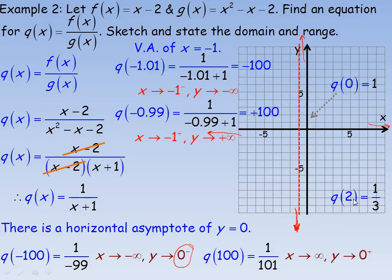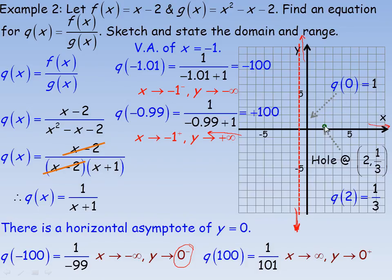Because the x minus 2 factors were divided out during simplification, x cannot actually equal 2 in the original function — it would give 0 over 0, which is undefined. Substituting x equals 2 into the simplified function gives 1 over 3. So there is a hole in the graph at the point 2 comma one-third. The simplified and original functions are the same everywhere except at x equals 2.